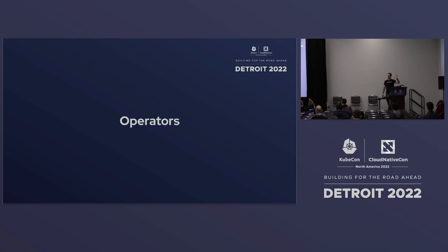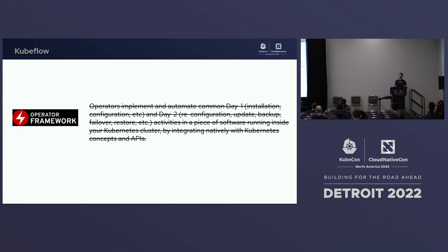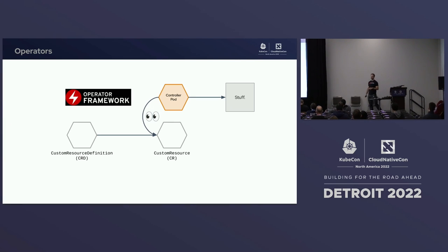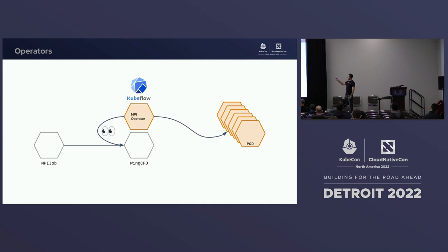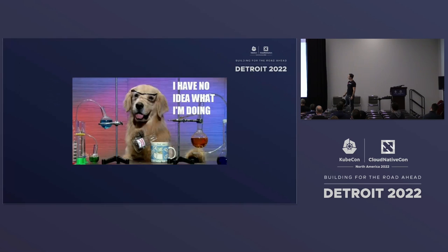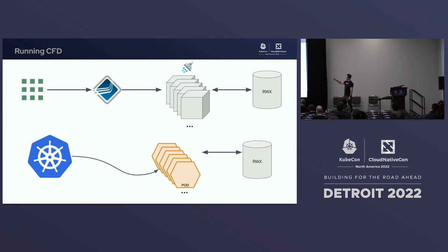Let's go deeper: Operators. Kubernetes operators — most everybody is familiar. Operators are just a pod: there is a controller pod that looks at instances of a custom resource. Custom resource definitions extend the Kubernetes API, and then it does stuff. In this case, we're talking about the MPI operator — the stuff it does is MPI stuff. So we've got the MPI operator, we have this MPI job, I'm running a wing CFD job, and it's going to happen in a lot of pods.